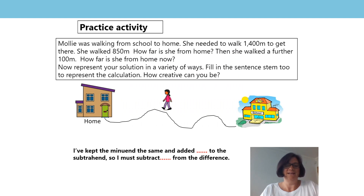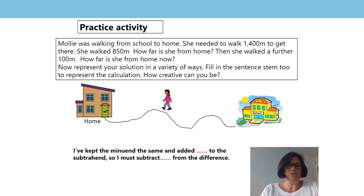Hello again. Here's the practice question Mrs Grimes left you with. How did you choose to represent your answer? Did you use a number line or a bar model or jottings? How did you use the stem sentence to help you?